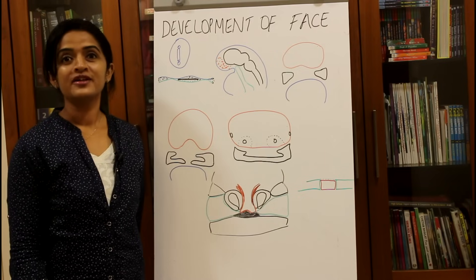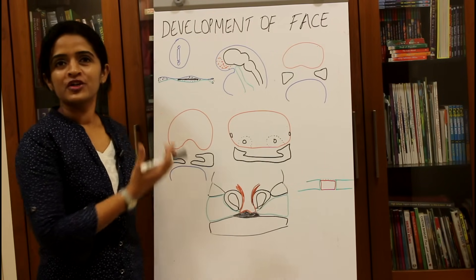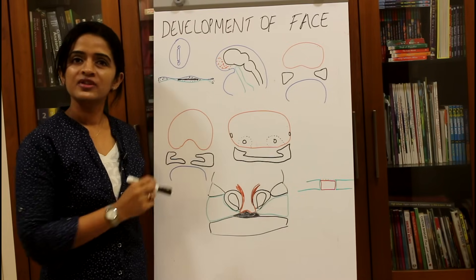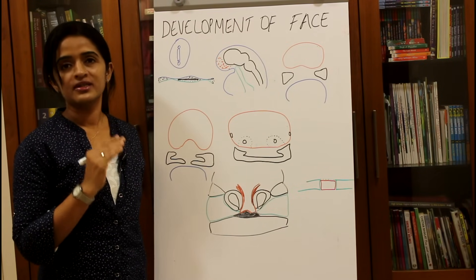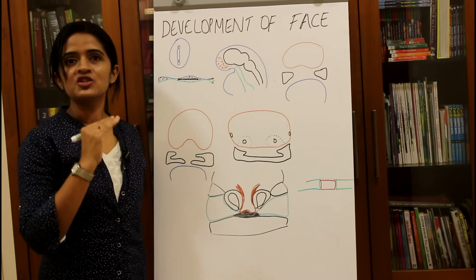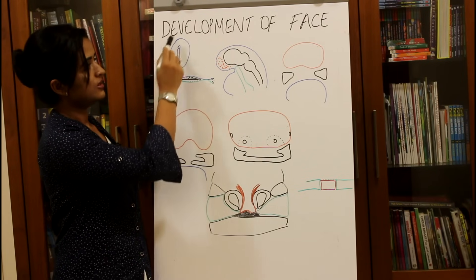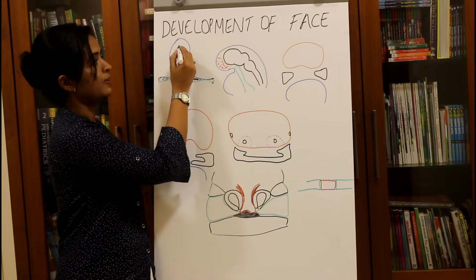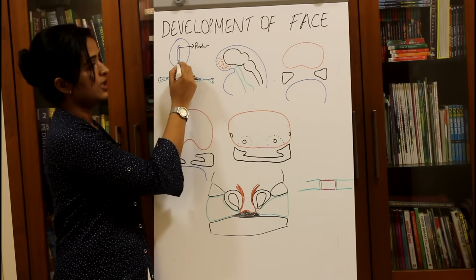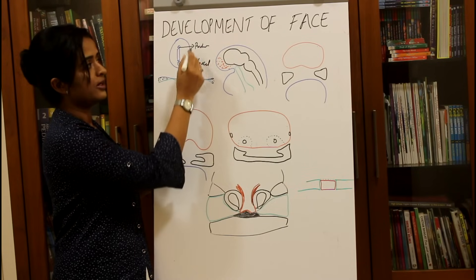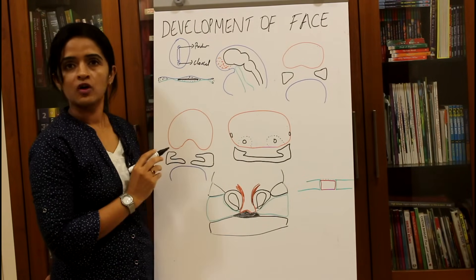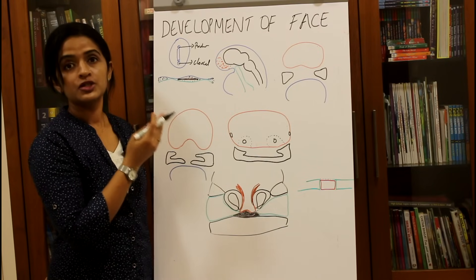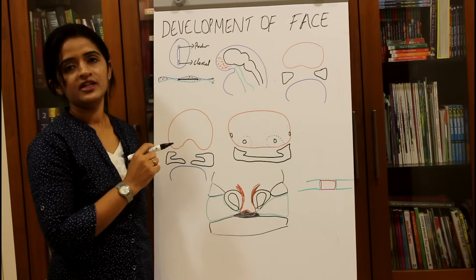Let's see the development of face, which is a favorite question for all the exams. Before going directly into the development of face, just have a recap of how the embryonic disc is looking by the end of the third week. The embryonic disc is made up of three layers: ectoderm, endoderm, and mesoderm, arranged like a sandwich. Anteriorly you can see the pre-cordal plate, and posteriorly the cloacal membrane. Between them there is a neural tube, and underlying that is the notochord.